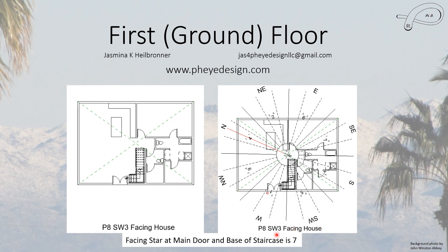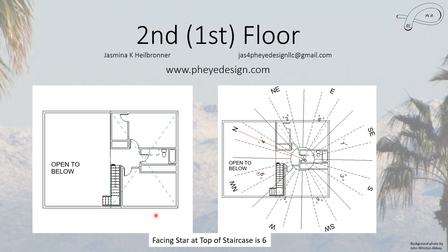The house just barely faces Southwest 3 — you can see this line is a little to the left, not straight down, which is why it's Southwest 3. It's about one and a quarter degrees off of being right on the line, so very close. I've placed all the flying stars here; they're a little hard to read so I'll tell you the important parts. The main door is located where you have a facing star 7. This door could be moved anywhere between this line and over here, and you'd still have star 7 as your facing star, giving some flexibility.